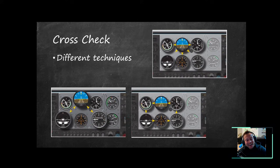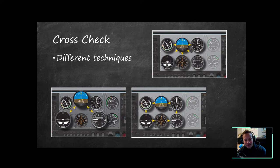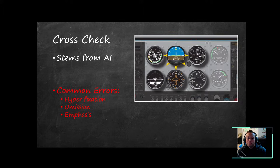There's the cross-check. There are a couple of flavors. One starts at the attitude indicator, then look at your turn coordinator, back to the attitude indicator, down to the VSI — called the inverted V. The rectangular pattern: start at the attitude indicator and move rectangularly around the instruments. My favorite: start at the attitude indicator, go down to the VSI, back to attitude indicator, down to the heading indicator, back to attitude indicator, turn coordinator. Everything stems off the attitude indicator — I fly the plane with it and confirm everything else.